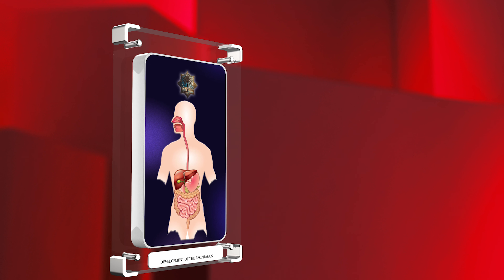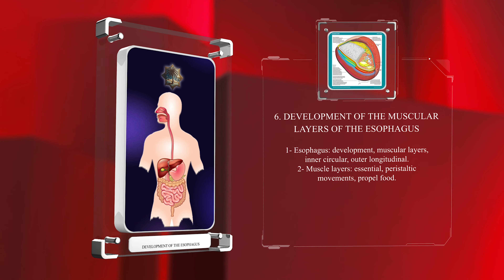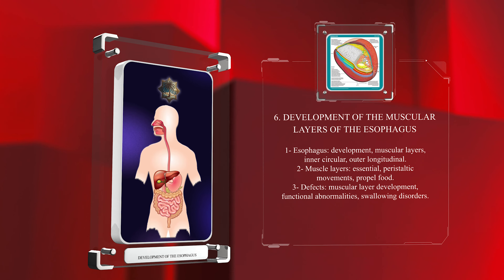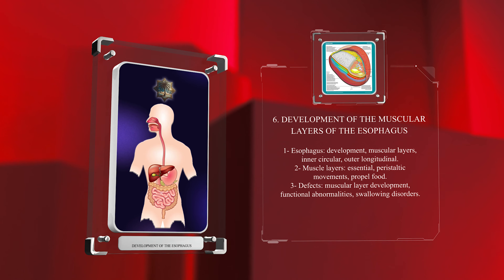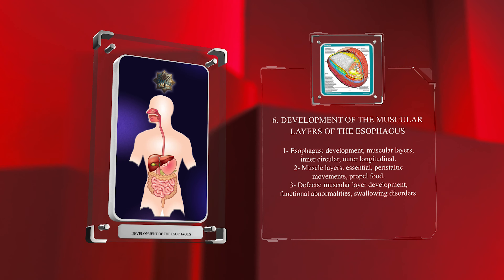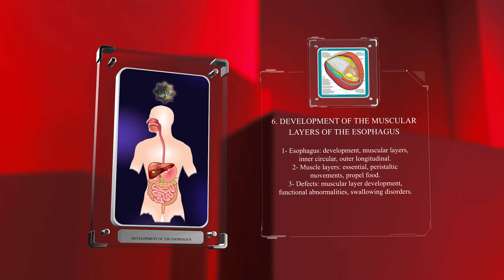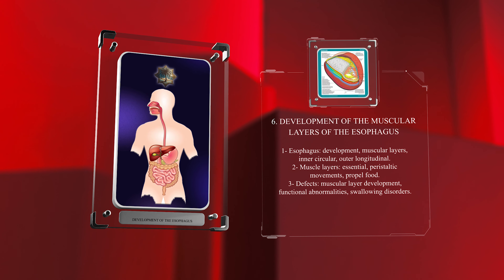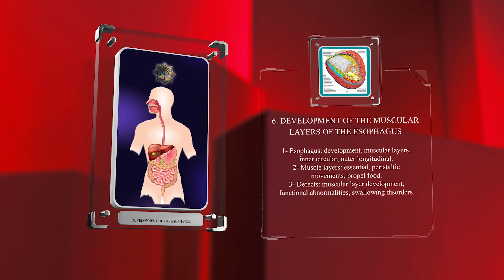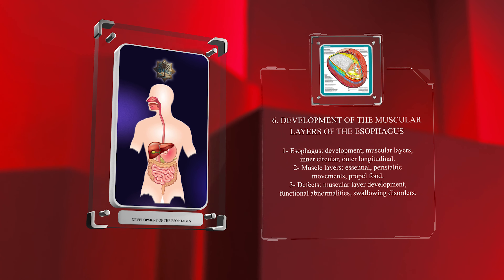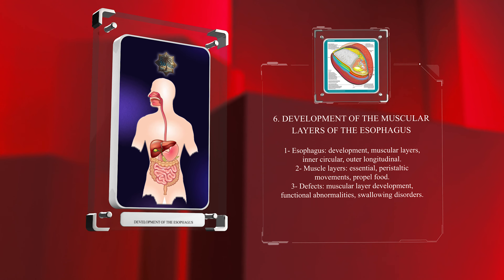The development of the muscular layers of the esophagus is a complex process that involves the formation of both the inner circular and outer longitudinal muscle layers. These muscle layers are essential for the peristaltic movements that propel food down the esophagus. Interestingly, defects in muscular layer development can result in functional abnormalities, such as disorders affecting swallowing.